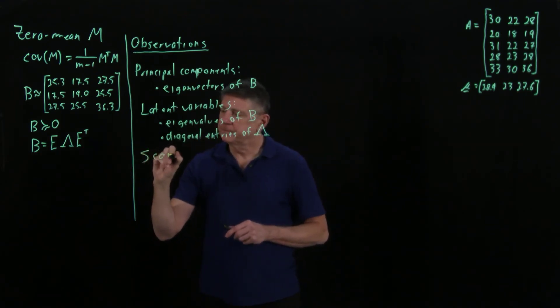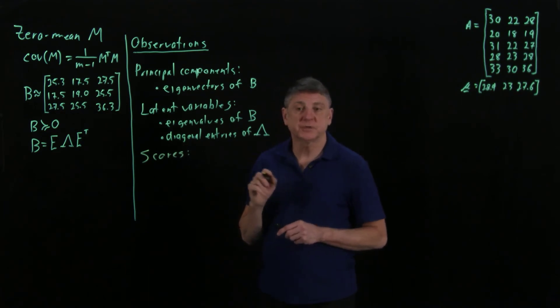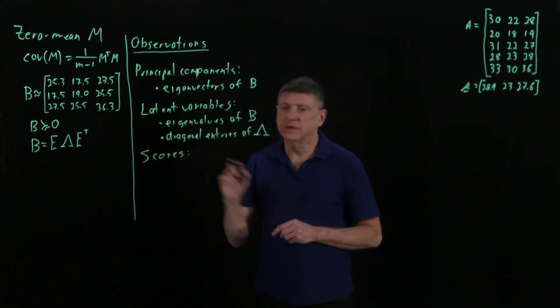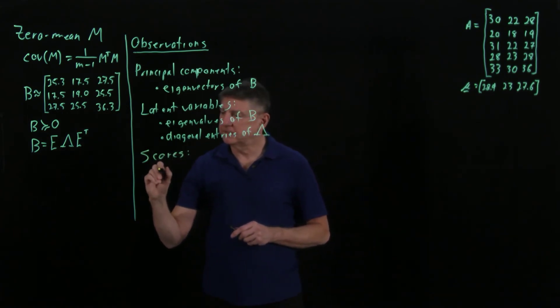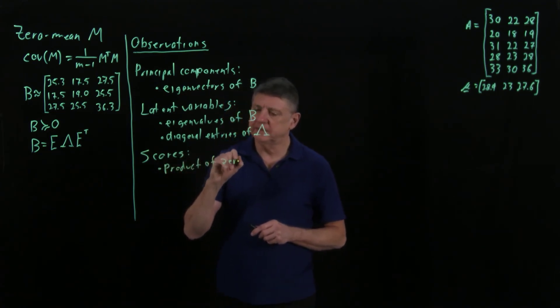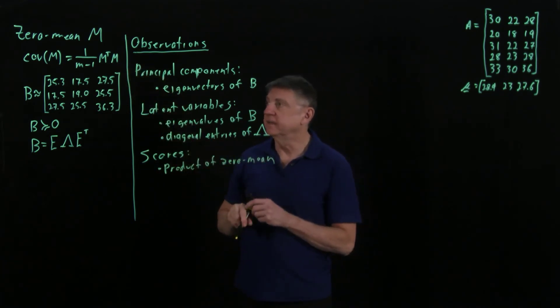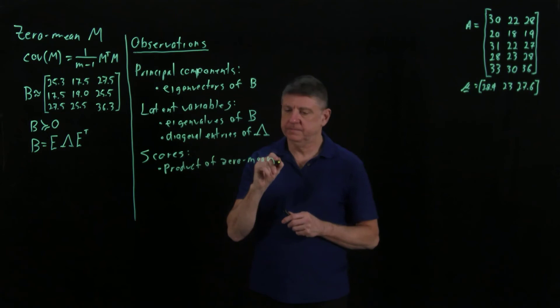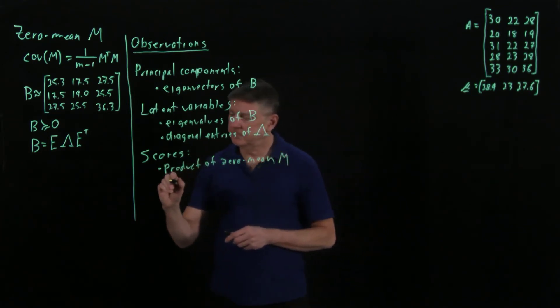The third one, which we're going to use in a subsequent session in greater detail, is the scores. These are the product of the zero-mean data - in our terminology, that's the data in matrix M - products of zero-mean matrix M with principal components.